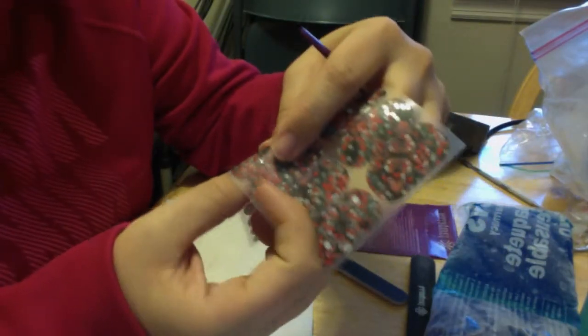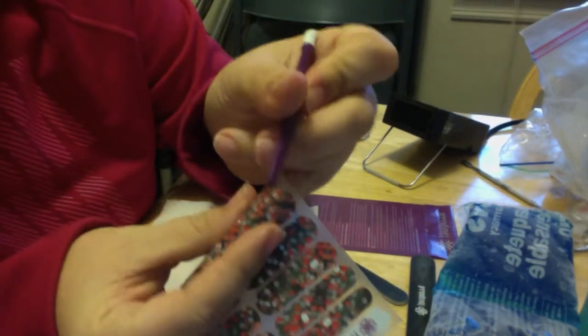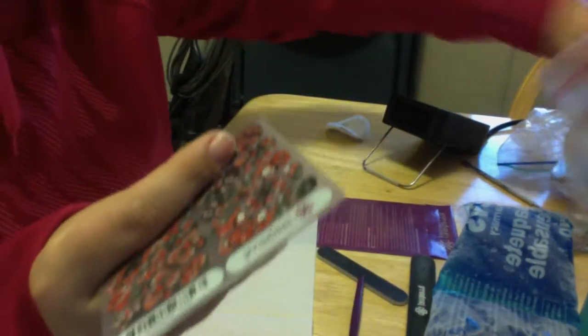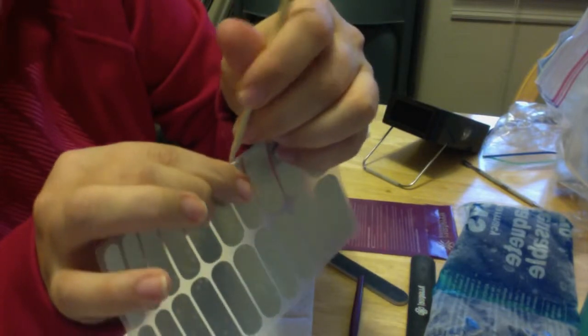Once you find the wrap that fits, you gently and carefully peel it up a little bit. As you notice, I'm using the back of this cuticle pusher. You can use the back of an orange stick. Here's the one that fits me. I'm going to carefully pull it up.